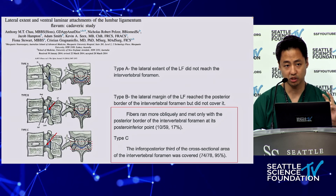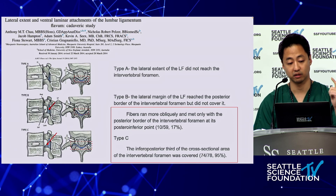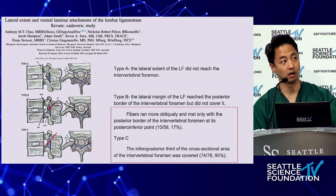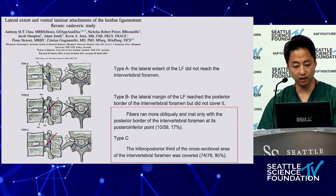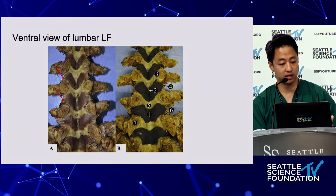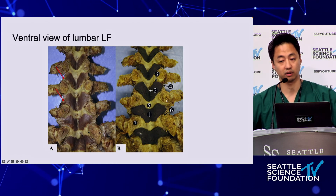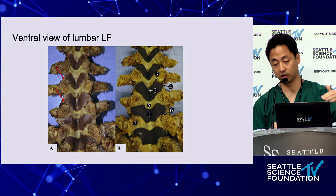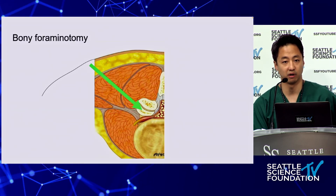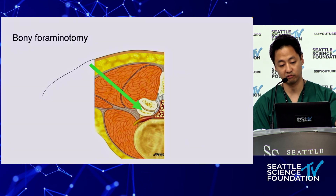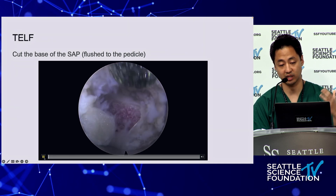Another key point from this paper: in Type B and C, the ligamentum flavum covers the cranial aspect of the caudal pedicle. If you look at the red arrow, the butterfly takes a dip onto the top of the caudal pedicle. That's important because when you're doing a bony foraminotomy — not trans-SAP, but purely a bony foraminotomy where you're trying to cut off the SAP on top of the pedicle — you need to know where the ligamentum flavum is.